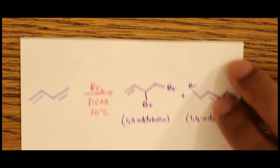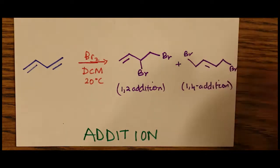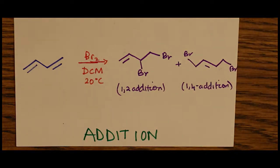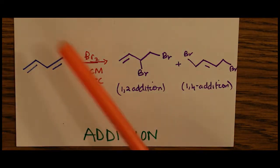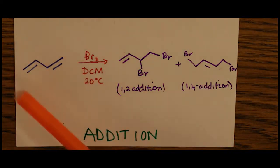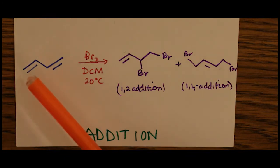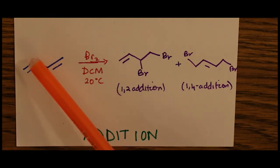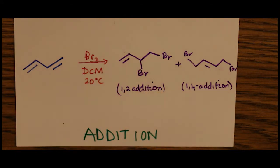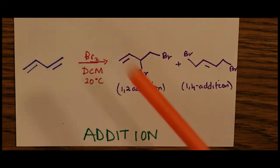The final addition reaction of the day involves a conjugated diene. A diene is said to be conjugated when we have two pi bonds allylic to one another. That means the pi bonds are one carbon away from one another.